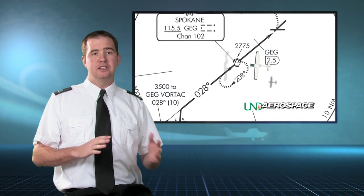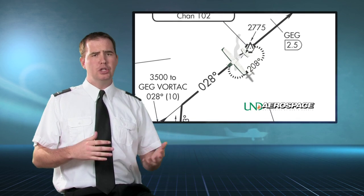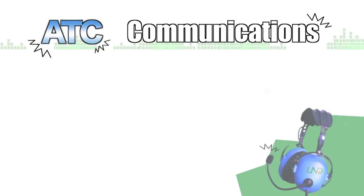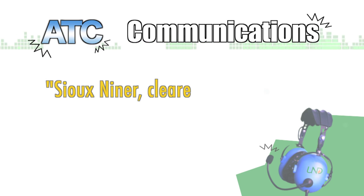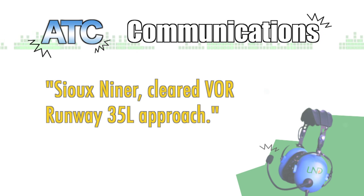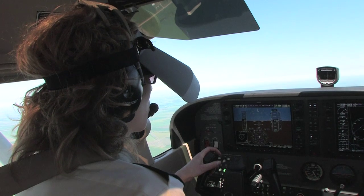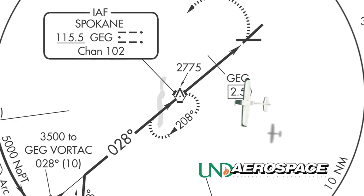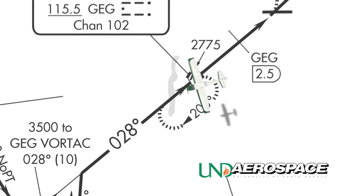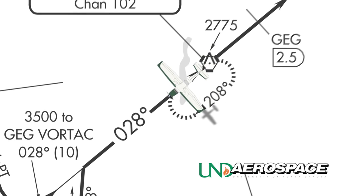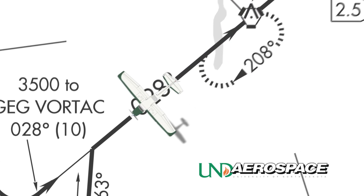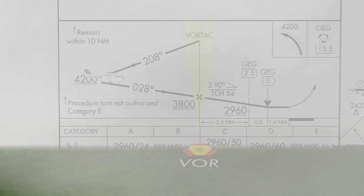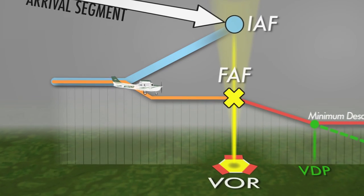An aircraft that flies a full approach procedure without the assistance of radar vectors will usually get a shorter clearance: 'Two-Niner, cleared VOR runway 3-5 left approach.' This clearance is more concise because the pilot will be expected to follow the published approach procedure to join the final approach course. She will not receive a heading and altitude to fly from air traffic control. The pilot will sometimes be requested to report when established on the final approach course.